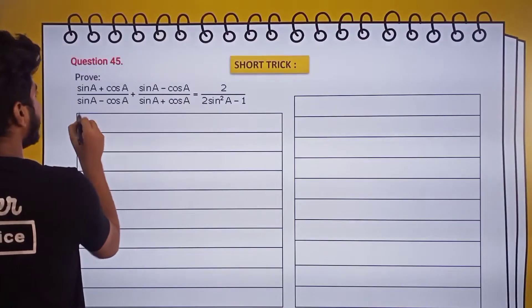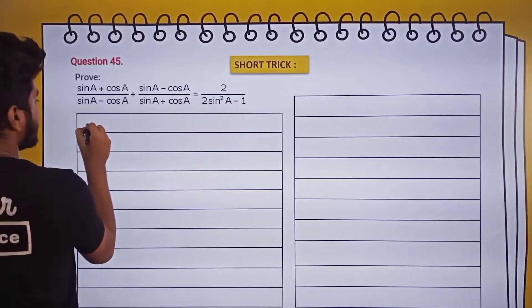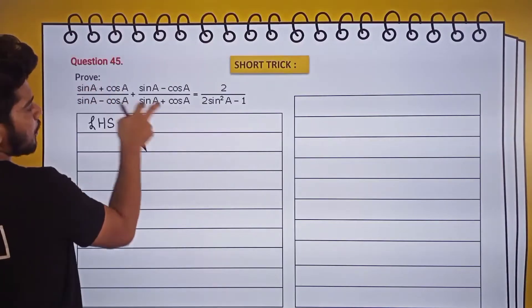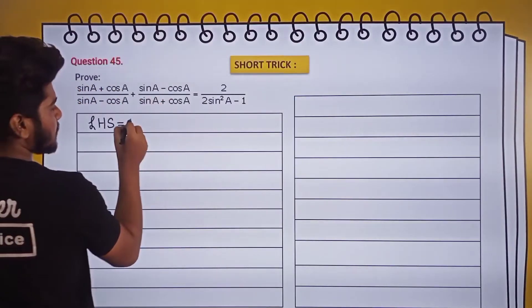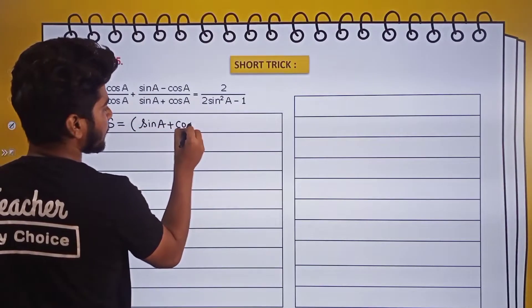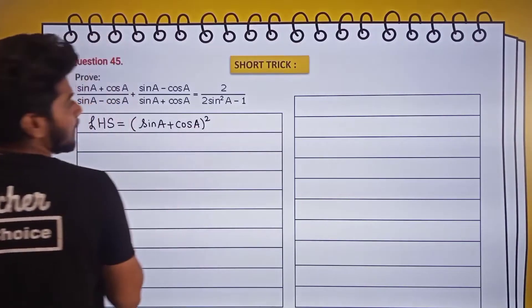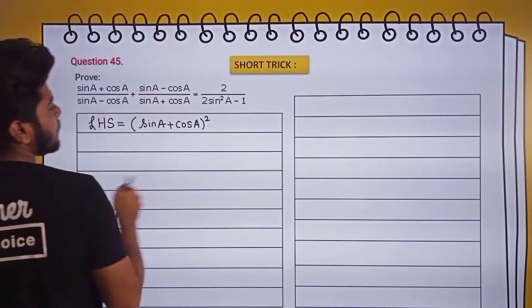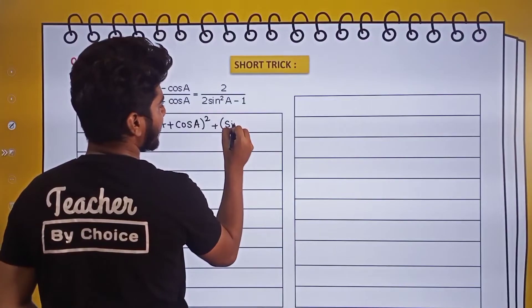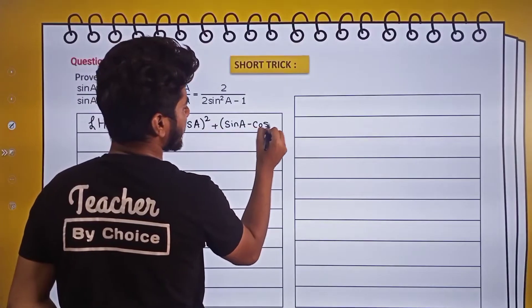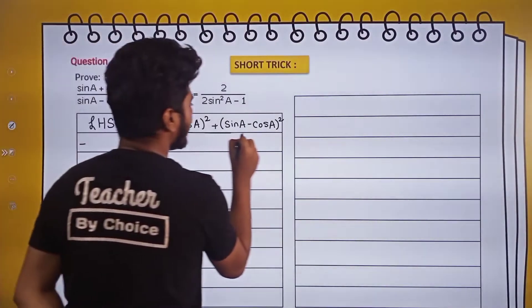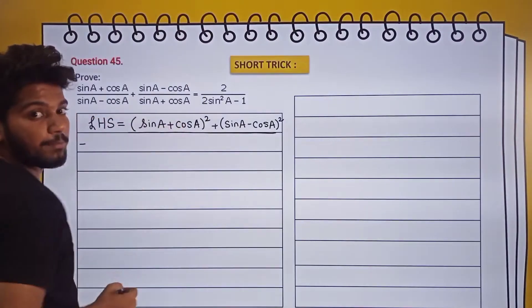We'll start with the LHS. First, what we will do is cross multiply. So sinA + cosA into sinA + cosA gives (sinA + cosA)², and when you multiply this into this you get (sinA - cosA)². In the denominator we get (sinA - cosA)(sinA + cosA).